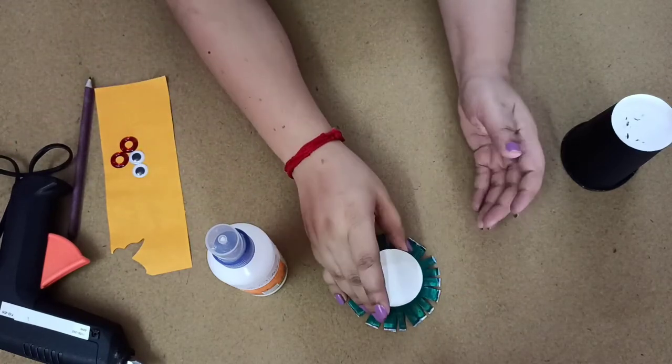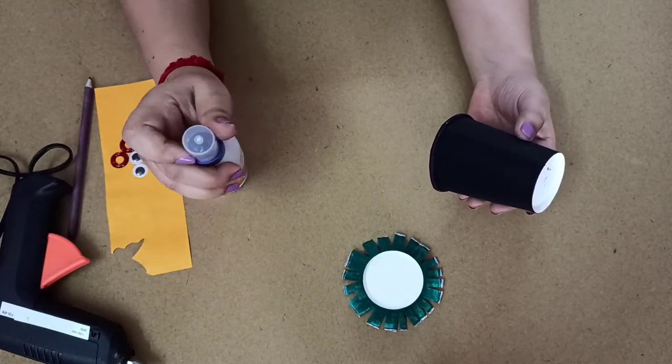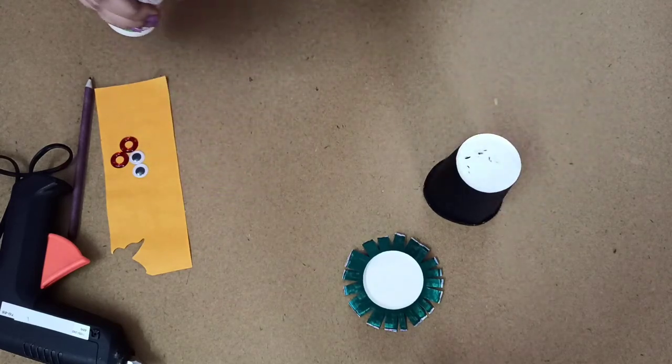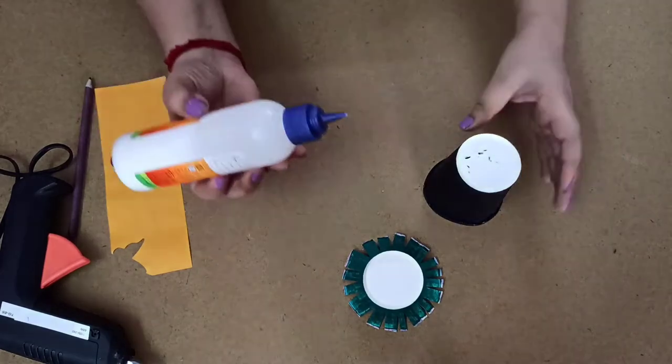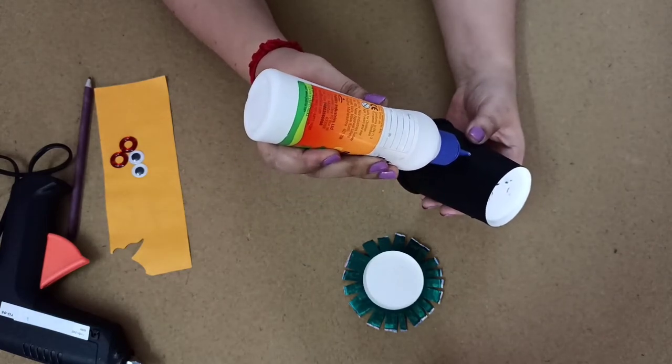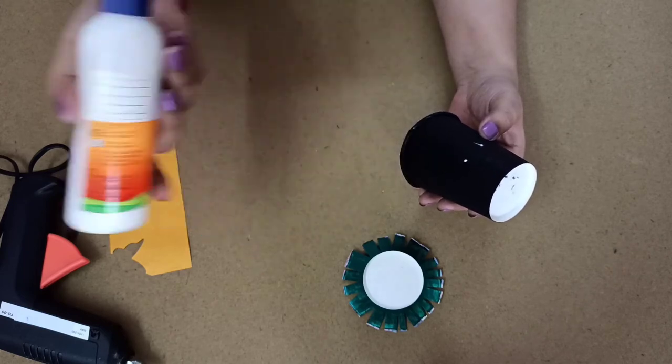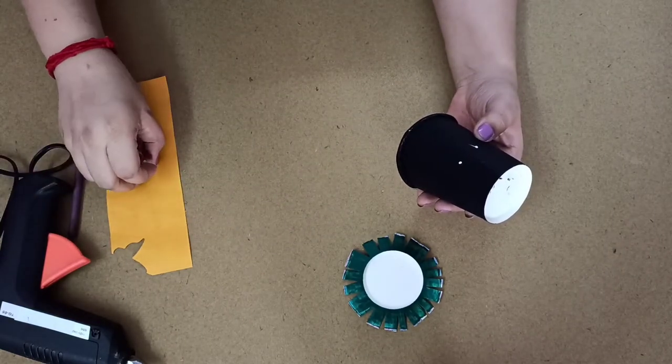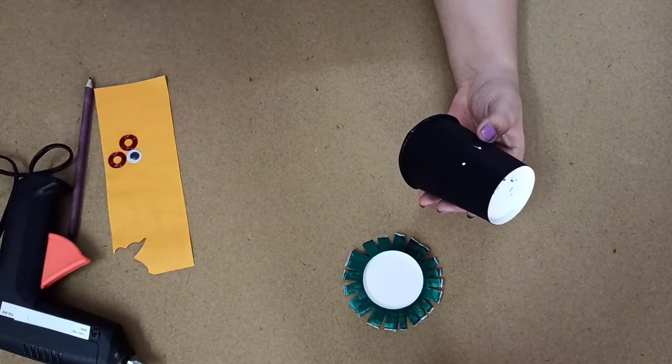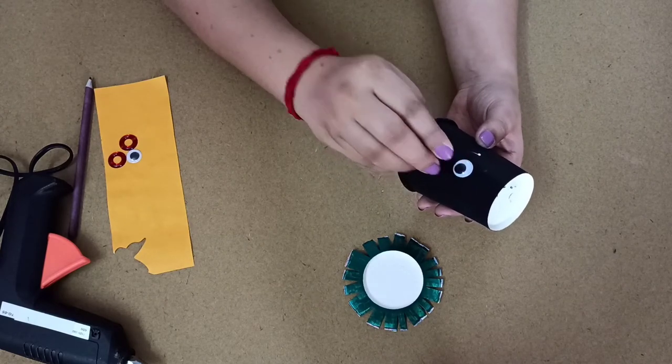Once this is ready, I am going to make face of the crow. Line a drop of glue and sticking the googly eyes.